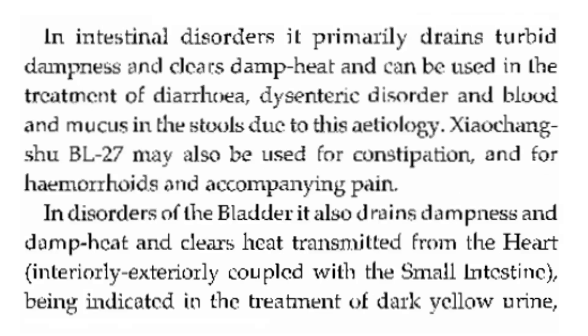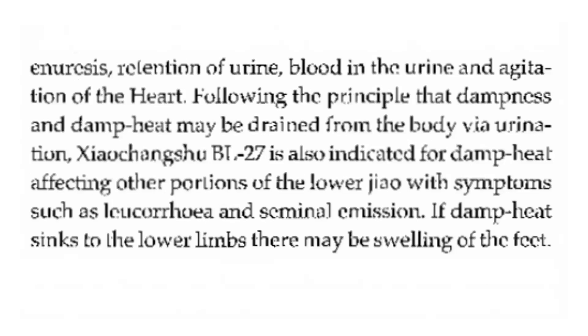In intestinal disorders, it primarily drains dampness and clears damp heat, and can be used in the treatment of diarrhea, dysenteric disorder, and blood and mucus in the stools. Bladder 27 may also be used for constipation, hemorrhoids, and accompanying pain. In disorders of the bladder, it also drains dampness and damp heat, and clears heat transmitted from the heart — interiorly-exteriorly coupled with the small intestine — indicated in dark yellow urine, enuresis, retention of urine, blood in the urine, and agitation of the heart.